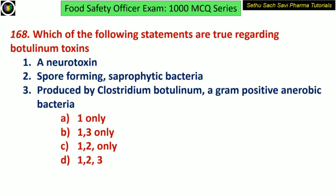Which of the following statements are true regarding botulinum toxin? Statement one: it is a neurotoxin. Statement two: it is produced by a spore-forming saprophytic bacteria. Statement three: it is produced by Clostridium botulinum, which is a gram-positive anaerobic bacteria. All three statements are true.